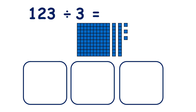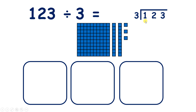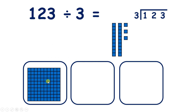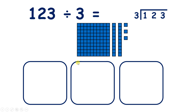Now we have 123 divided by 3, and we can answer this using short division. With short division, we always start with our highest place value digit, so we start with our 100. But we can't share out our 100, because with division we need to share equally. So we have 0 hundreds, because 1 divided by 3 is 0 remainder 1.